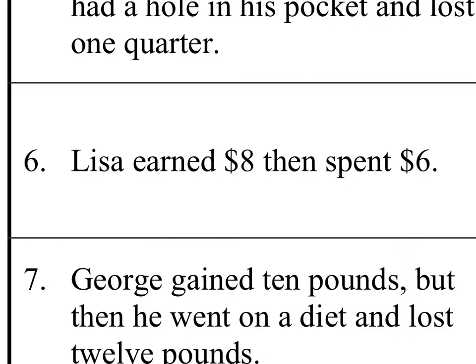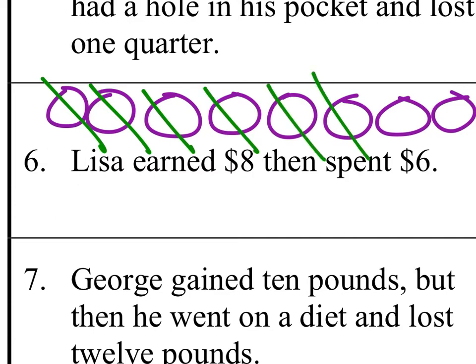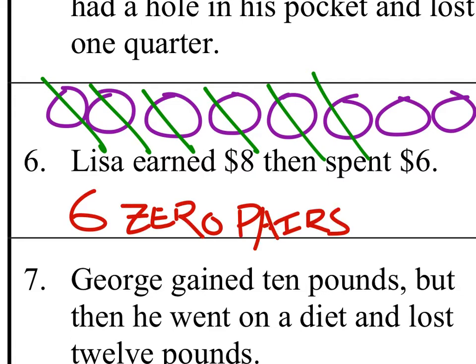Lisa earned eight bucks then spent six bucks. How many zero pairs would be in this thing? Well, let's draw a diagram and find out. So let's say she earned eight bucks. Let's say these are dollar coins, silver dollars, whatever they call them. One, two, three, four, five, six, seven, eight silver dollars, right? And then these ones account will be ones that she spent. She spent six of these, right? So she got rid of this one, two, three, four, five, six. So how many zero pairs are there? Yeah, six zero pairs.